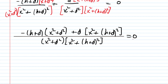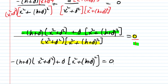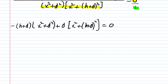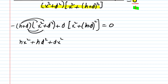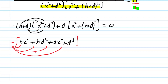Writing zero over 1 allows us to cross-multiply, leaving just the numerator equal to zero. We FOIL (H+D)(X² + D²): multiply H·X², H·D², D·X², and D·D² to get D³. But remember there is a minus sign on the outside, so that minus distributes and changes all those plus signs to minus signs. Then we add D times the quantity (X² + (H+D)²).